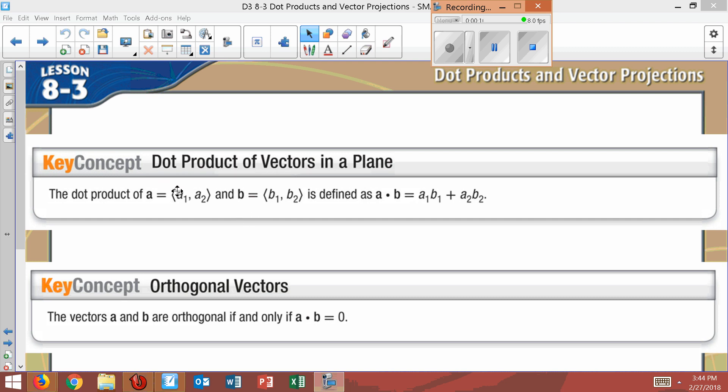You just multiply X times X, Y times Y, but then you add them together. So it's X1 times X2 plus Y1 times Y2. And you add them together and you get a single value.